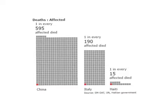Putting the death tolls in context: in China, only 1 in every 595 people affected by the earthquake actually died. In Italy, 1 in every 190 affected died. Whereas in Haiti, for every 15 people affected by the earthquake, 1 died. The impact was far greater in Haiti, partly because in Italy only one town and a few surrounding villages were affected — not a large urban area — and China, though it affected large towns, was not a major city.